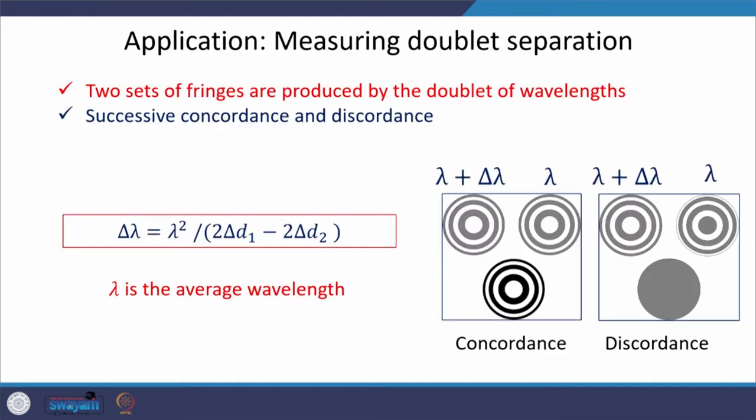The next application is measuring the wavelength difference in a doublet. If we use a sodium lamp in the Michelson interferometer, we know that sodium has two lines at 5890 nm and 5896 nm, which are very closely spaced. The separation between the two wavelengths is very small. When the source produces a doublet — two closely spaced wavelengths — we can calculate the wavelength separation of the doublet.